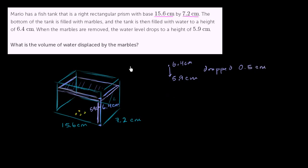So what does that tell us about the volume of water displaced by the marbles? Well, the volume of water displaced by the marbles must be equivalent to this volume of another rectangular prism, where the top area is the same as the base of this water tank, and then the height is the height of the water drop.